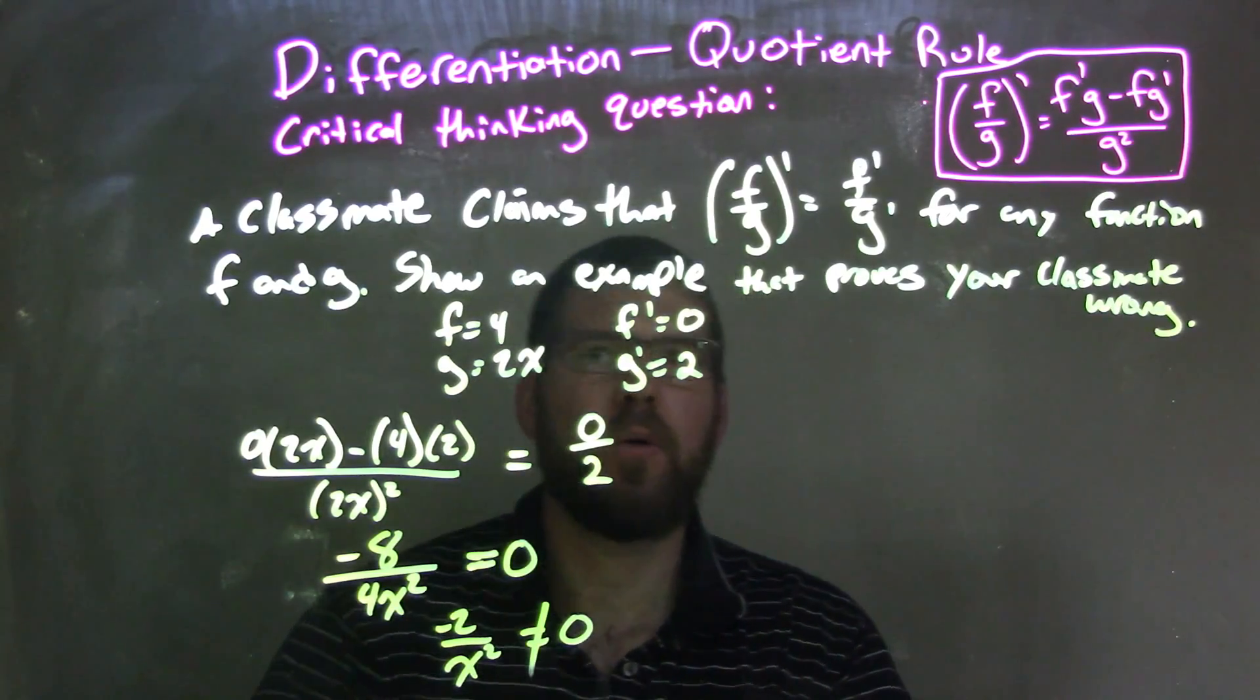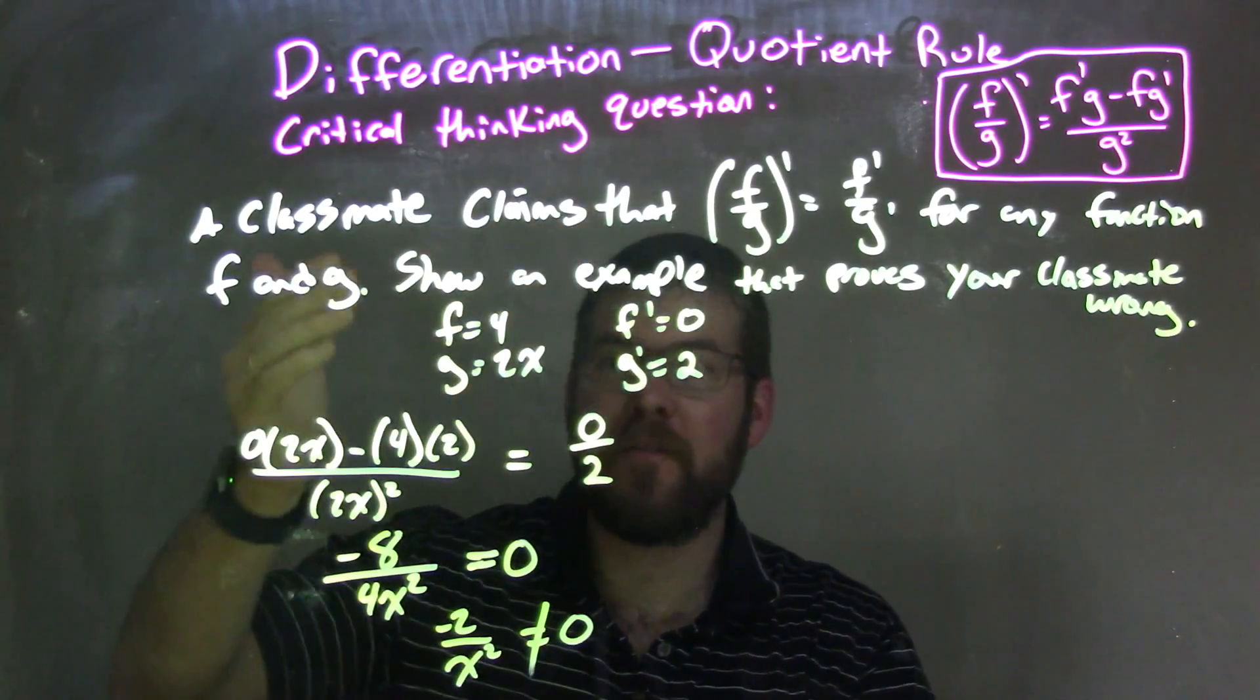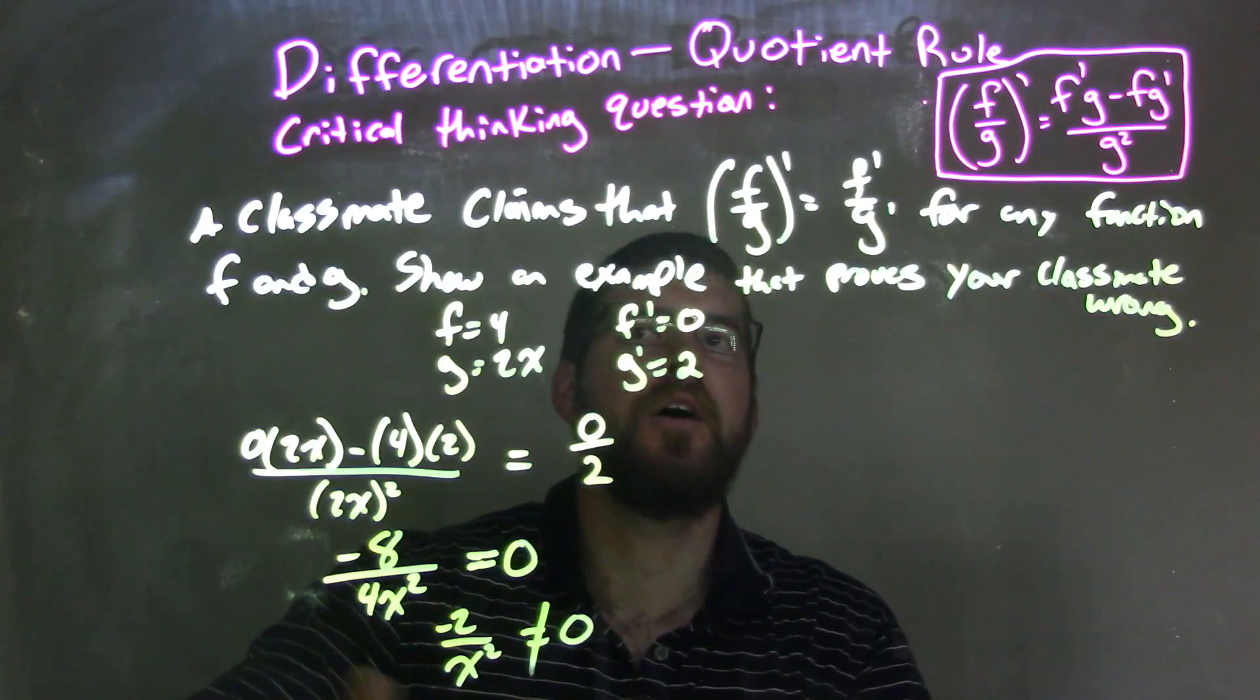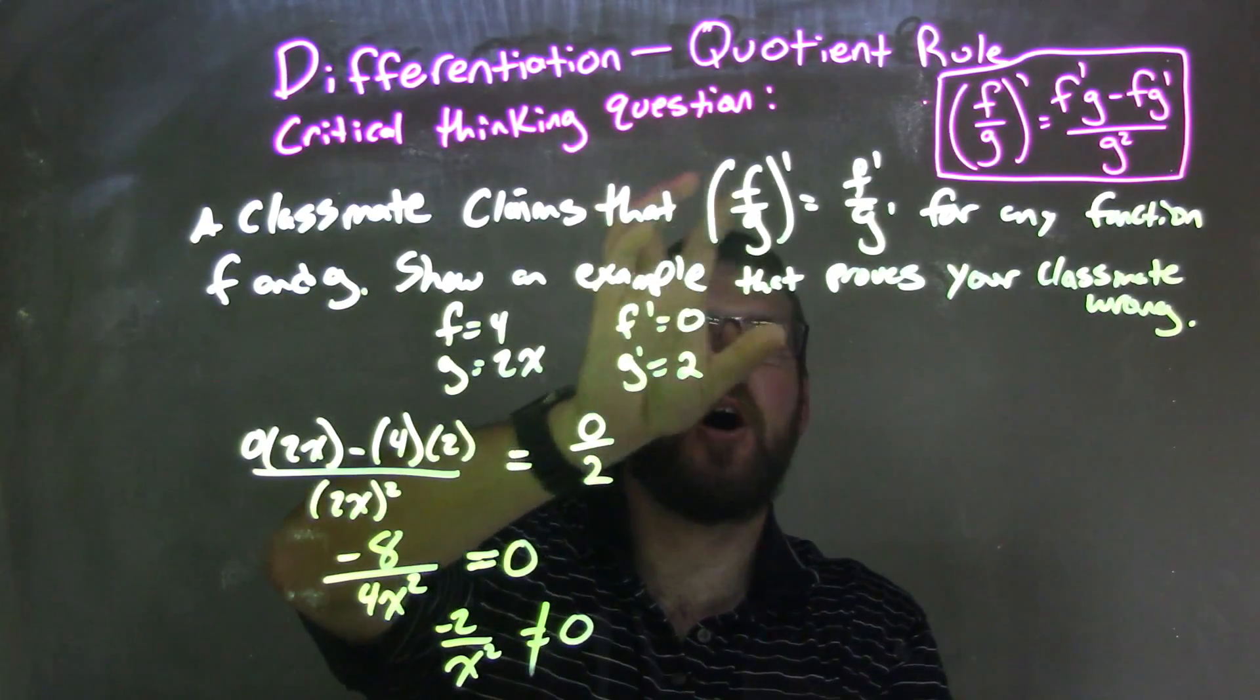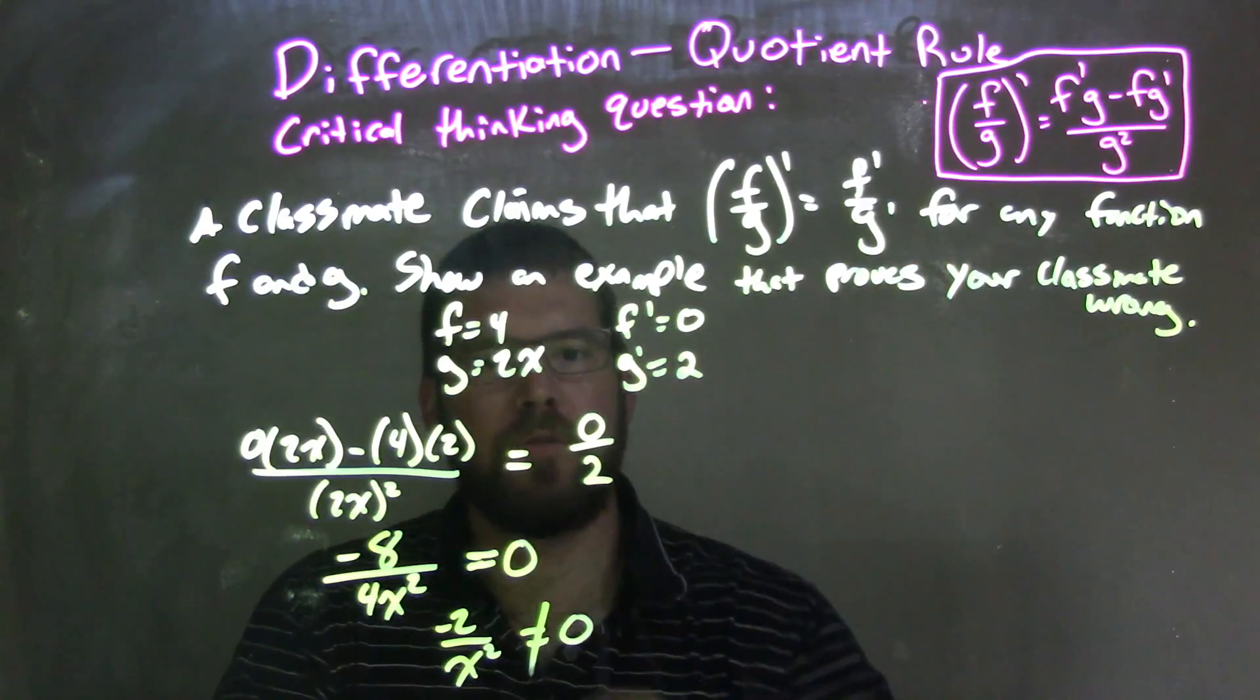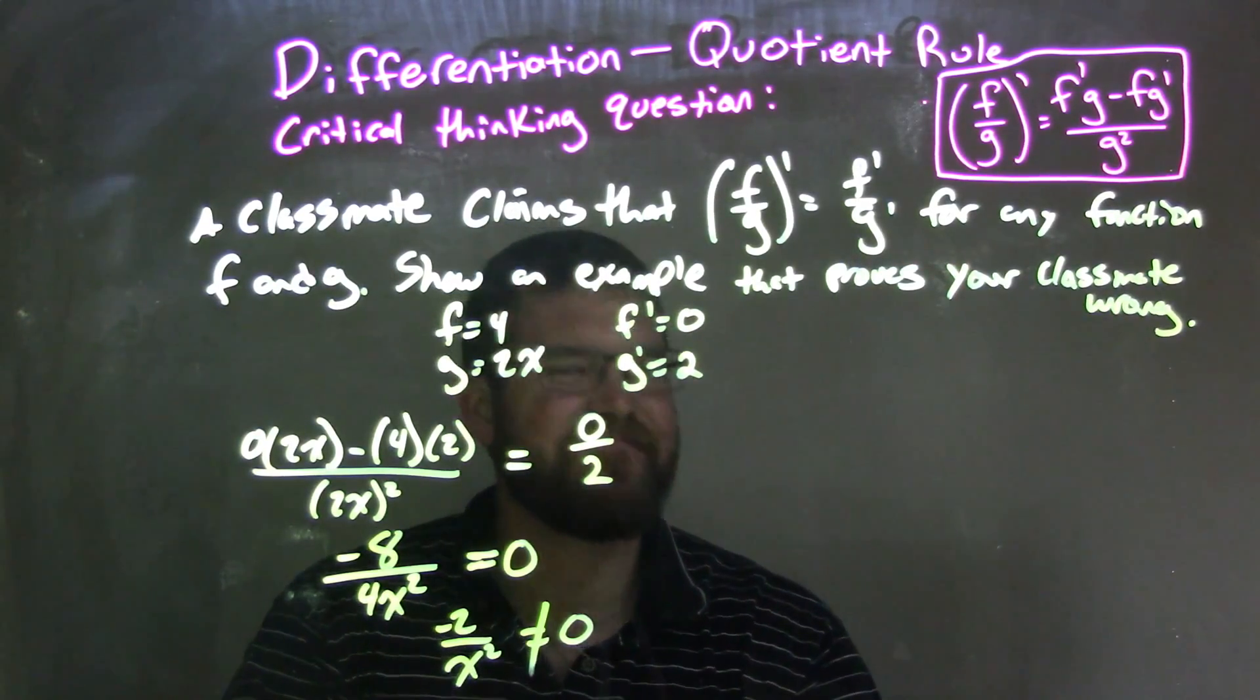So since my left and right are not equal, we can't make this claim. We've already found one case where it's not true. So we can't make the claim that it works, that f over g all prime is equal to f prime over g prime. So our classmate is wrong.